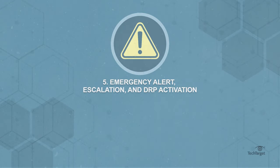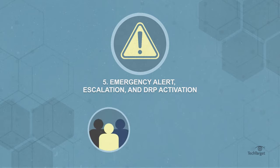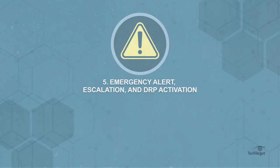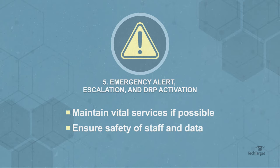Five: emergency alert escalation and DRP activation. If an incident continues to escalate, emergency response teams should be contacted, ready to carry out the organization's DR plan and be able to determine which elements of the DR plan to activate. DR teams should be ready to maintain vital services if possible, ensure safety of staff and data, and alert staff for how to proceed with their job safely.